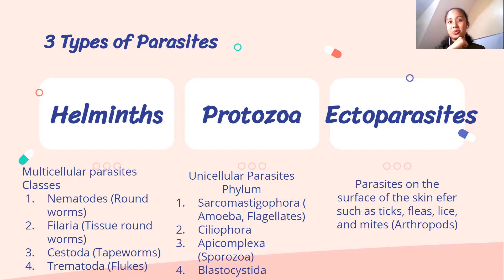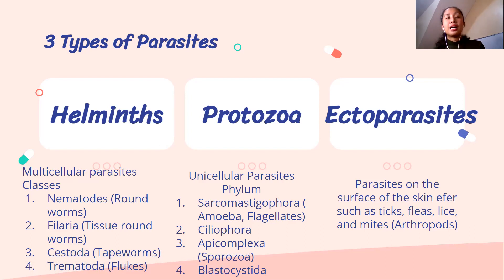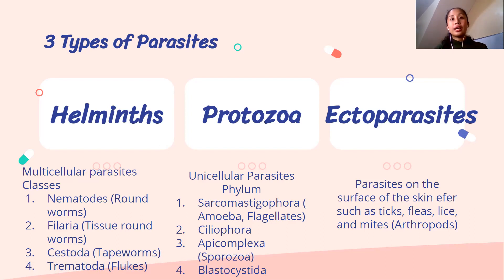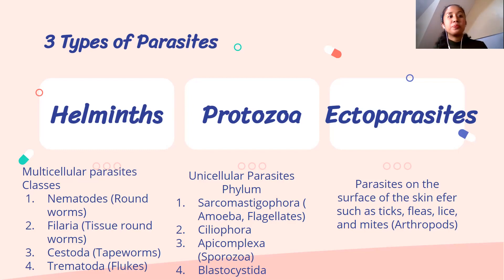Ectoparasites include crabs — body crabs, pubic lice, and arthropods in general. So helminths are multicellular parasites, protozoa are single-celled parasites and can only be seen using a microscope, and ectoparasites like ticks can be seen with the naked eye.